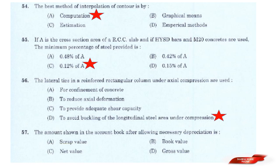Question: The amount shown in the account book after allowing the necessary depreciation is? Options: Scrap value; Book value; Net value; Gross value. Answer: Option B — Book value. The amount shown in the account book after allowing necessary depreciation is called book value.